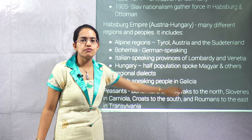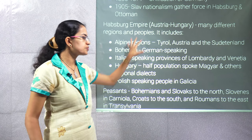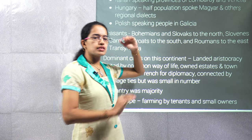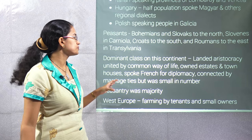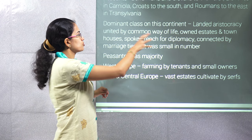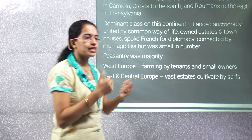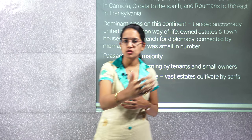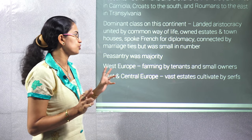In the Balkan region, people from different ethnicities followed different languages and belonged to different cultural groups. The peasants in the north, south, east and west belonged to different ethnic groups. The dominant class on this continent was only the landed aristocracy, which had a common way of living, with mutual ties in terms of marriage and business — even across countries in Europe during that time.